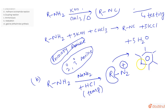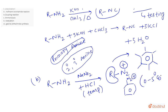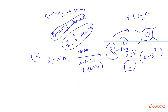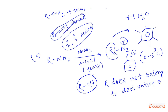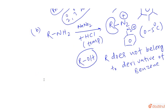If R is a derivative of benzene — the benzene ring should be present, and the remaining positions can be anything — then this compound is stable at 0 to 5 degrees centigrade. If R is not a derivative of benzene, it will not be stable, leading to the formation of alcohol. In the case of benzene, it is called benzene diazonium salt, and there are many reactions related to it.